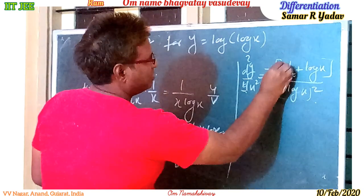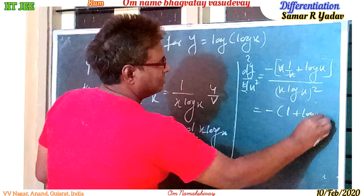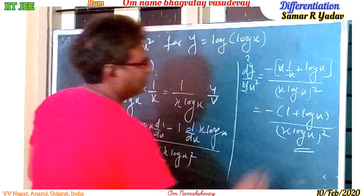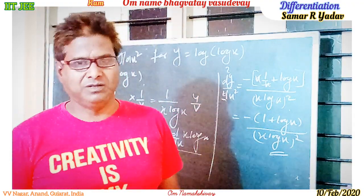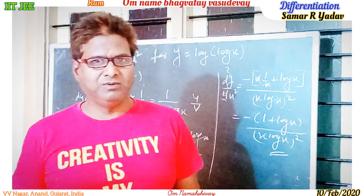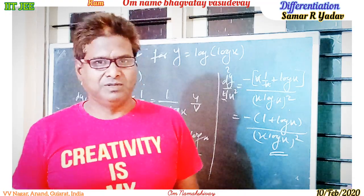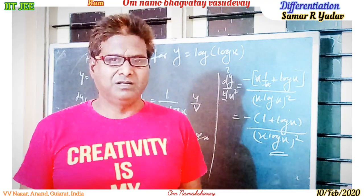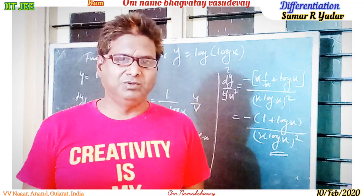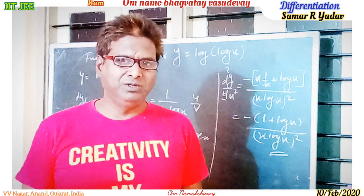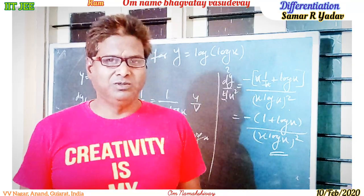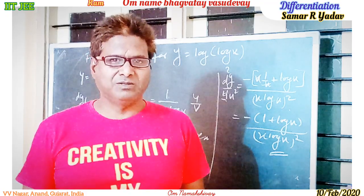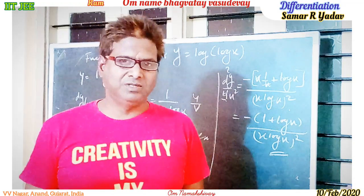So this simplifies: the x will cancel, giving minus of (1 + log x) upon (x log x) whole square. To summarize: we start with y = log(log x), find the first derivative dy/dx = 1 upon x log x, then apply the quotient rule formula — v times du/dx minus u times dv/dx, upon v square — to get the final answer: d²y/dx² = minus(1 + log x) upon (x log x) whole square.